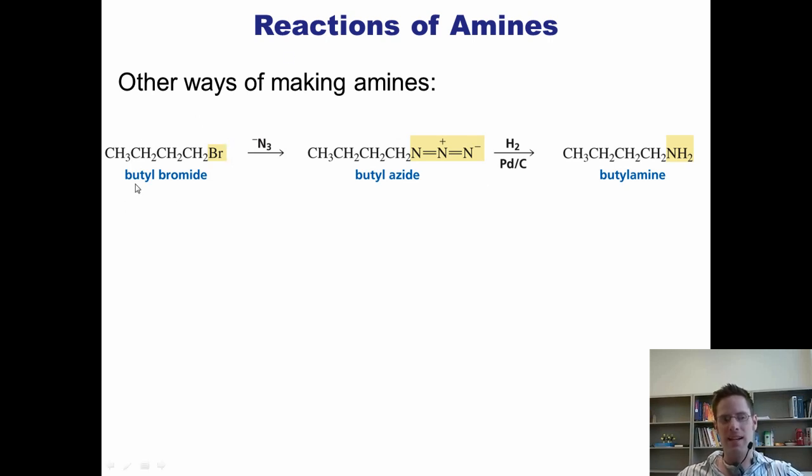There are other ways of getting a primary amine as your exclusive products as well. If I take an alkyl halide like this and treat it with N3, that's negatively charged azide, the azide comes in as a nucleophile, kicks off the bromide, and gives me this butyl or alkyl azide intermediate. If this is treated with hydrogen gas and palladium carbon, it's reduced to the primary amine exclusively.